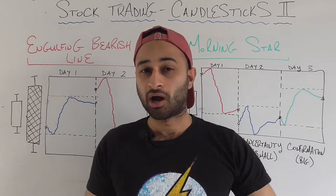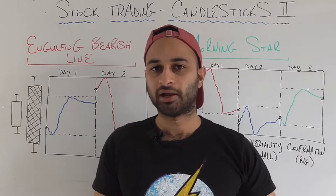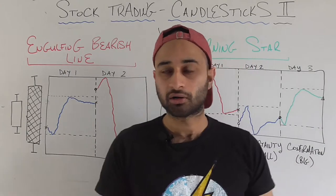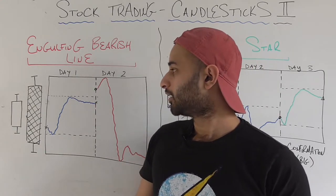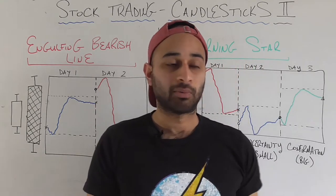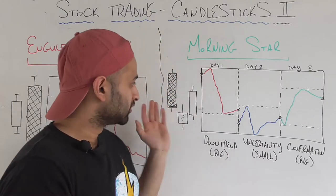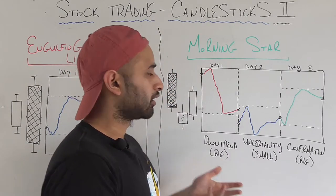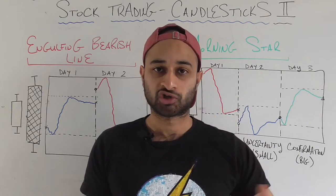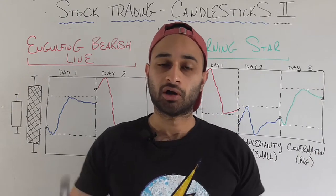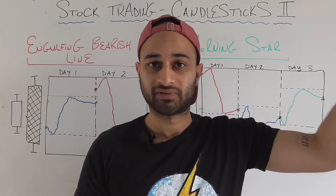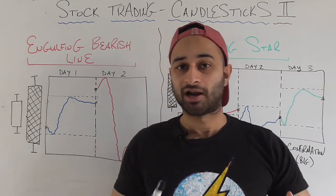This will be an intermediate video on candlestick patterns — we'll have an advanced video later with more complicated ones. Today we'll look at a two-day pattern called the engulfing bearish line, which is considered a negative pattern, and then a slightly more complicated three-day pattern called the morning star, which is considered a reversal pattern when you're going negative and may be about to go positive.